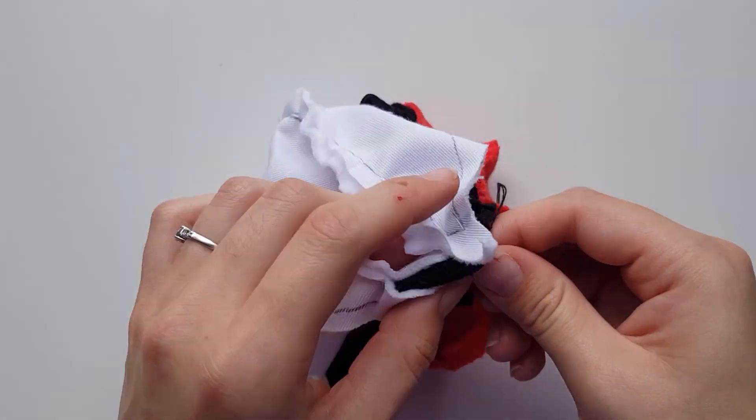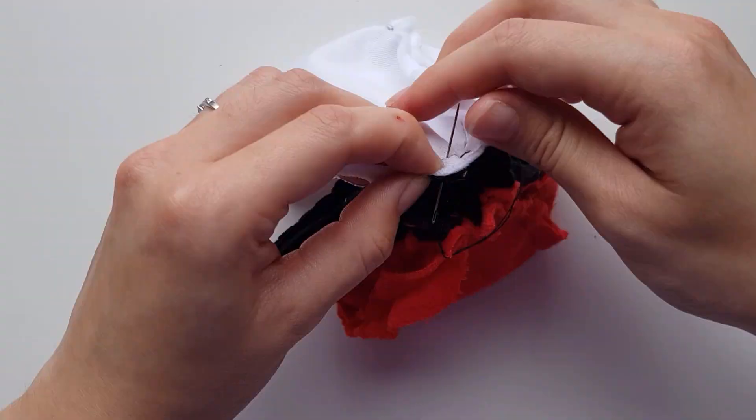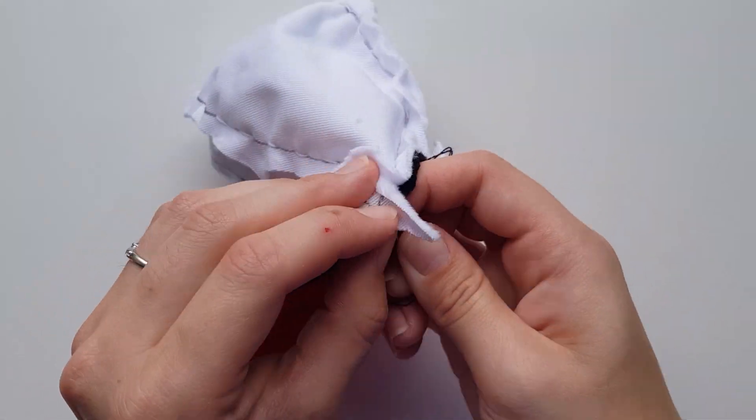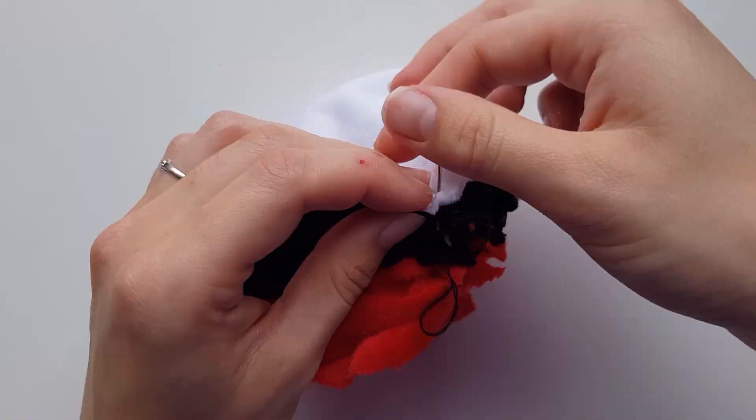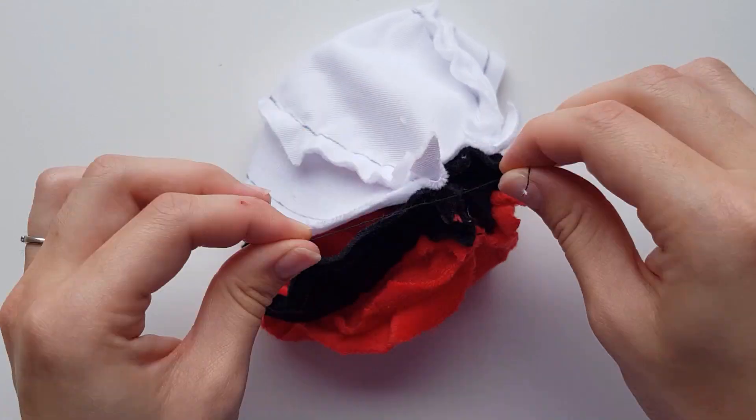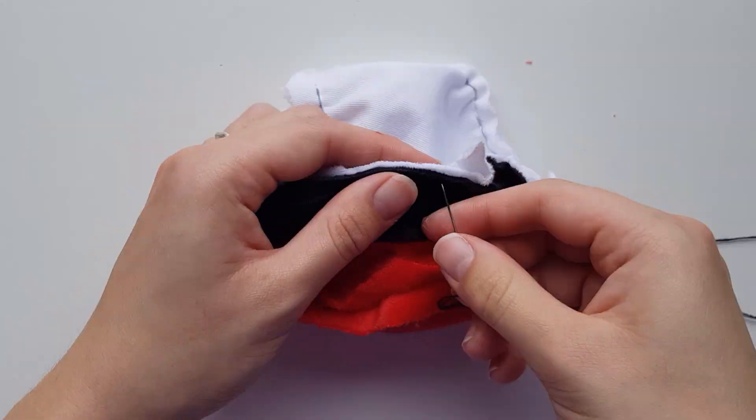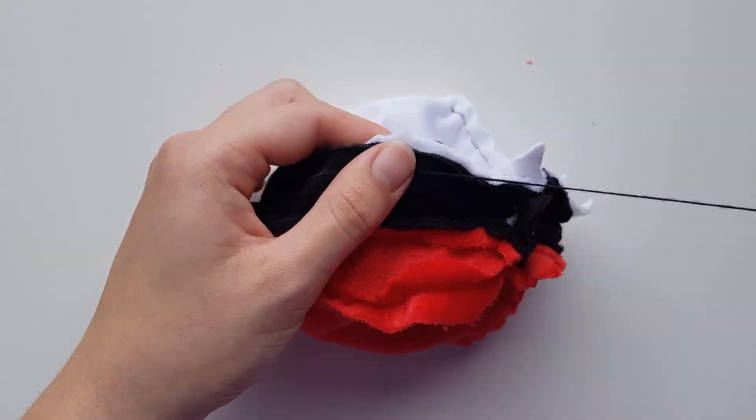When you reach the end of the sewing line, begin joining the white piece along where you left the gap with the straight lines. Once all of the circle is sewn in, begin joining the white piece around the black strip also.